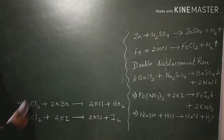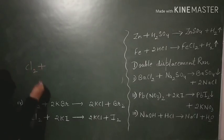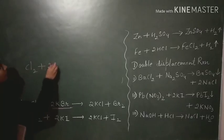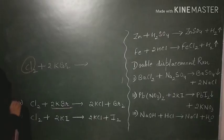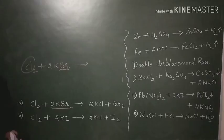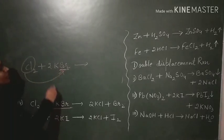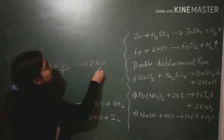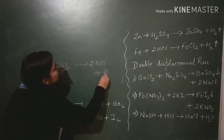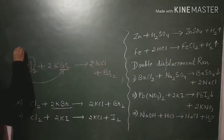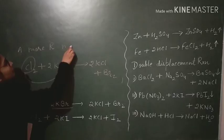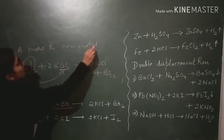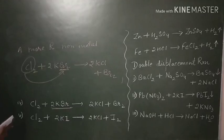Now coming to the example of non-metals. If we make chlorine (Cl2) react with potassium bromide (KBr), chlorine is more reactive than bromine. It will displace bromine and form 2KCl, that is potassium chloride, plus bromine. This is how a more reactive non-metal displaces a less reactive non-metal.